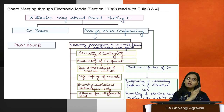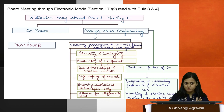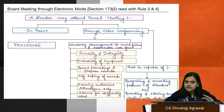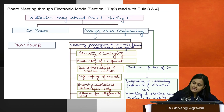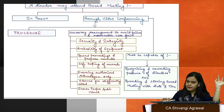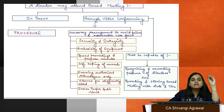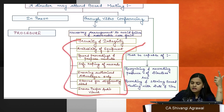A director can attend in person or through video conferencing. Whenever a company goes for a virtual meeting, it must ensure the setup is capable of recognizing participants, recording the director's presence, and storing everything along with date and time. The chairperson and company secretary, who are responsible for convening a board meeting, must make necessary arrangements to avoid any type of failure and take reasonable care.